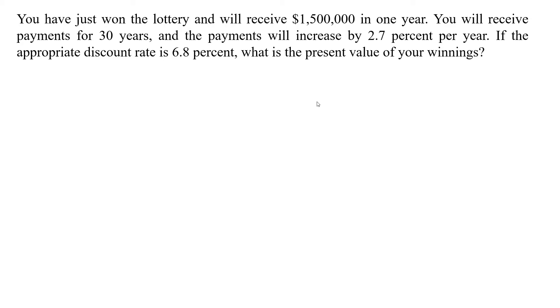You have just won the lottery and will receive $1.5 million in one year. You will receive payments for 30 years and the payment will increase by 2.7% per year. If the appropriate discount rate is 6.8%, what is the present value of your winnings?